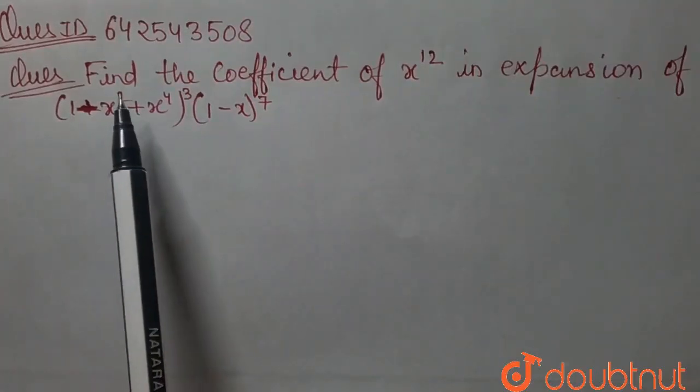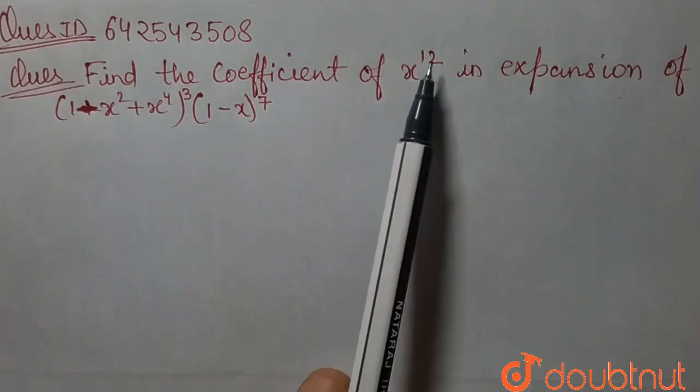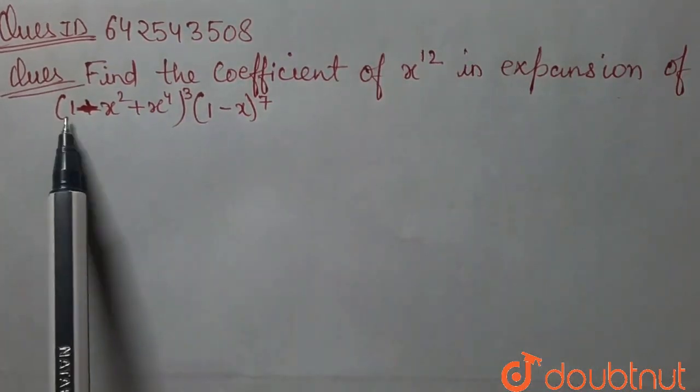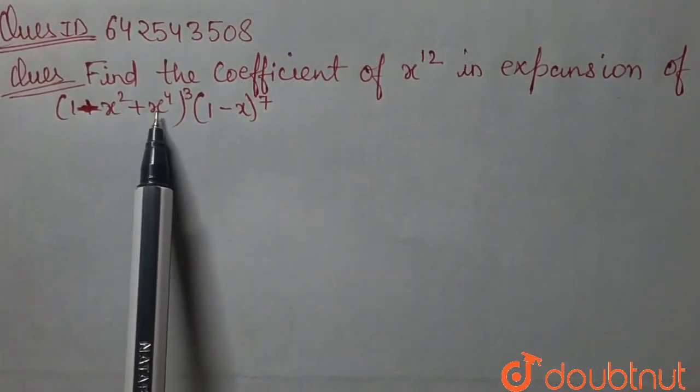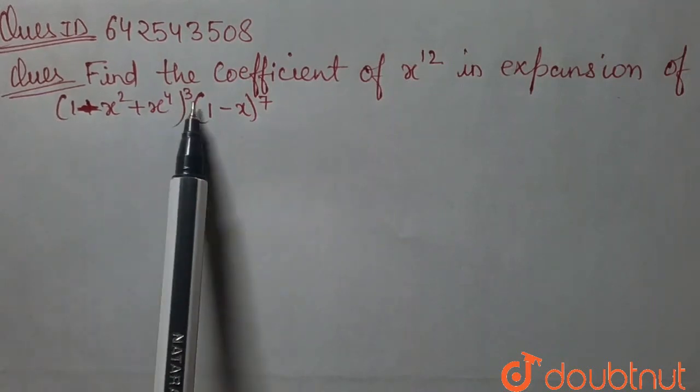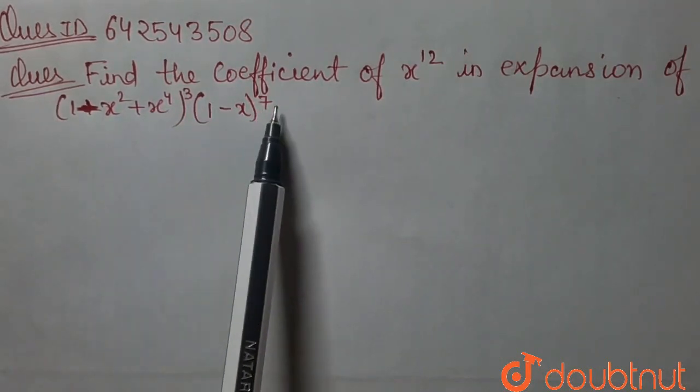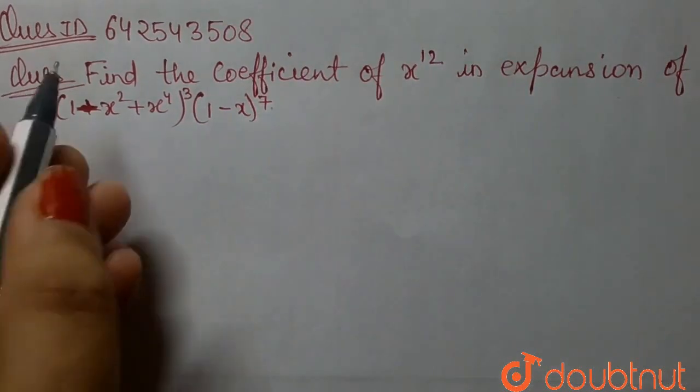Hello everyone, our today's question is find the coefficient of x to the power 12 in the expansion of 1 minus x square plus x to the power 4 whole to the power 3 times 1 minus x to the power 7.